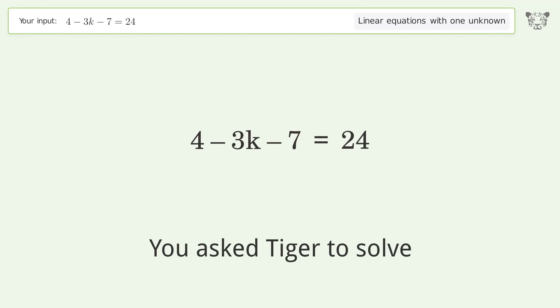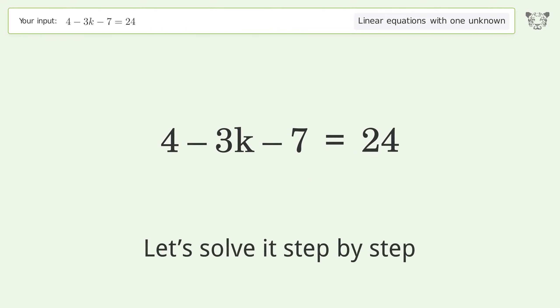You asked Tiger to solve this. It deals with linear equations with one unknown. The final result is k equals negative 9. Let's solve it step by step. Simplify the expression.